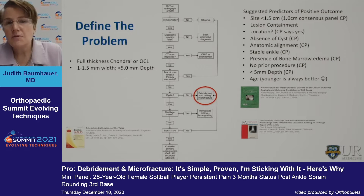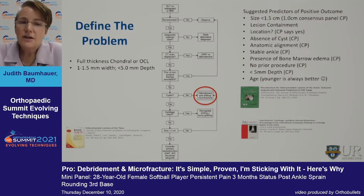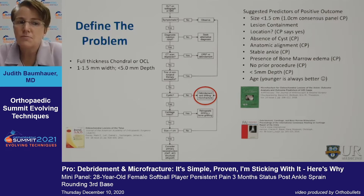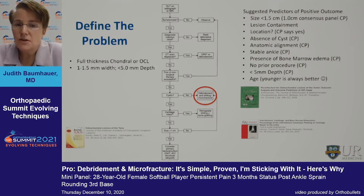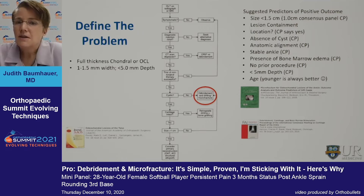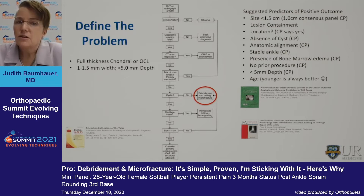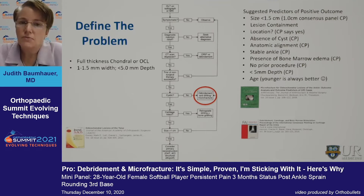In an osteochondral lesion, size matters. There are a number of experts, many of whom are on this panel today, who talk about the dimensions of this lesion — a width of 1 to 1.5 centimeters being appropriate and less than 5 millimeters of depth. A consensus panel published in Foot and Ankle International looked at factors predicting positive outcomes. Key considerations include size, whether the lesion is contained, whether it is a shoulder or central lesion, its location medial or lateral, and whether a cyst is associated.